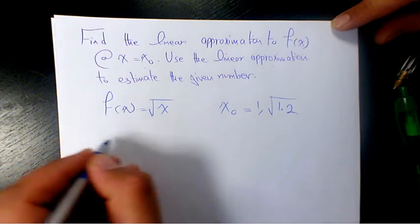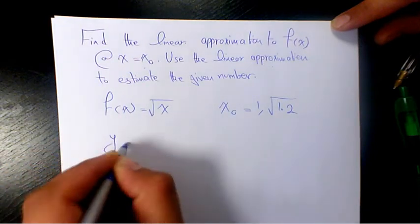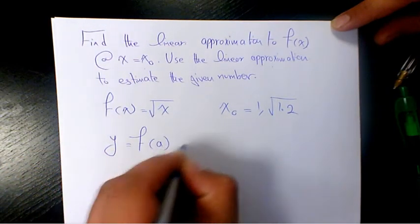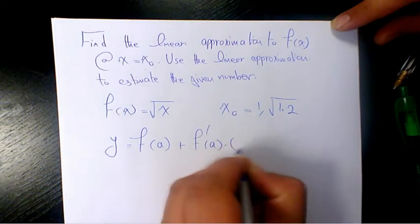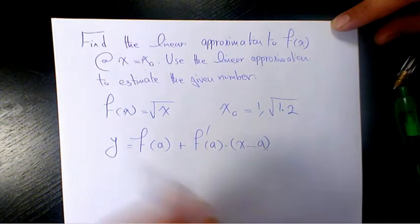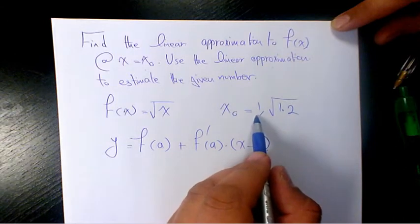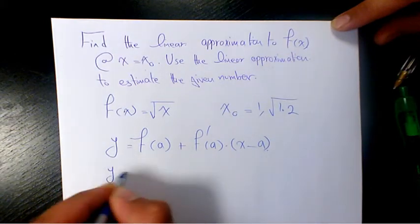The formula we have is y equals f of a plus f prime a times x minus a. On the first side, a is one, so it's going to be y equals f of one plus f prime one times x minus one.